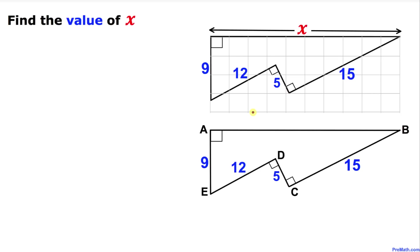Welcome to Premath. In this video tutorial we have got a shape that has four line segments with lengths 9, 12, 5, and 15 respectively. As you can see, we have right angles in this figure, and now we are going to find the value of x — in other words, we will find the value of line segment AB.